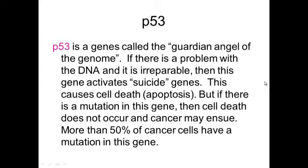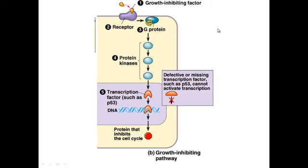50% of all cancer cells have a mutation in the P53 gene — that's an amazing fact. In the P53 pathway, a growth-inhibiting factor binds its receptor protein, which signals through a G protein via a signal transduction pathway, sending transcription factors into the nucleus where DNA is copied. A defective or missing transcription factor such as P53 cannot activate transcription, so when P53 is mutated, it can't trigger the genes that cause cell death, and the cell survives and becomes cancerous.